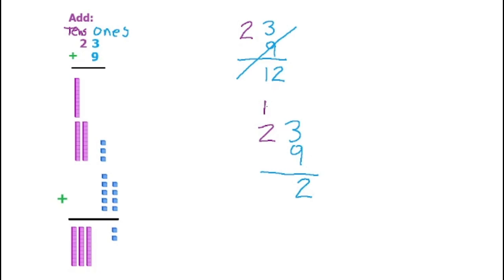So the 1 from the 12 goes here on the tens side. So then you add 2 plus 1. That gives you 3. So we know 23 plus 9 equals 32.